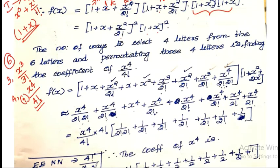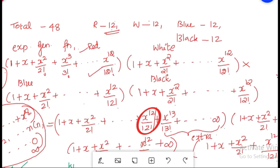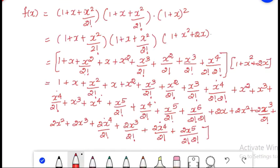Now we shall expand this expression. I have multiplied all the terms together. We need to find the coefficient of x raised to 4 by 4 factorial. The question says out of 6 letters, 4 have to be arranged. So we need to pick the terms containing x raised to 4 from the expanded expression and collect their coefficients.